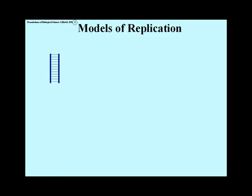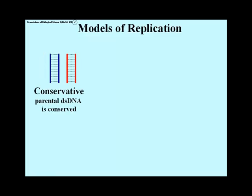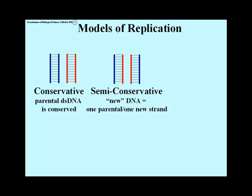Theoretically, there were three possible models for how a double helix could replicate. All involved the separation of the complementary DNA strands. At the left is conservative replication, in which the parental double strand is conserved. In the middle is semi-conservative replication, in which parental strands each combine with a new daughter strand. Though thought unlikely, the dispersive model shown at the right was at least a possibility to be considered.